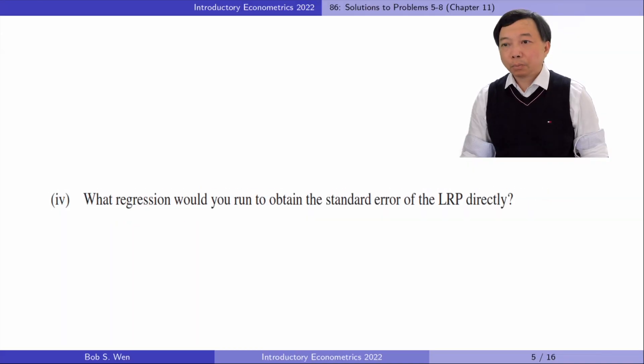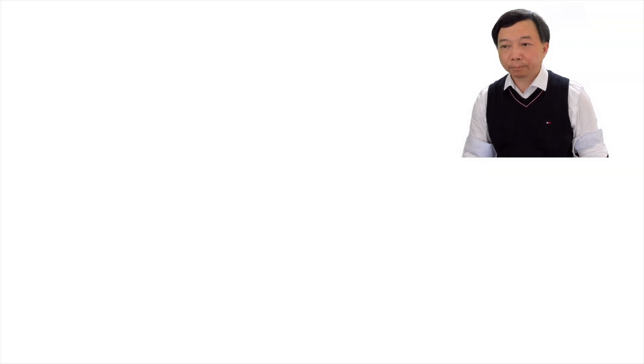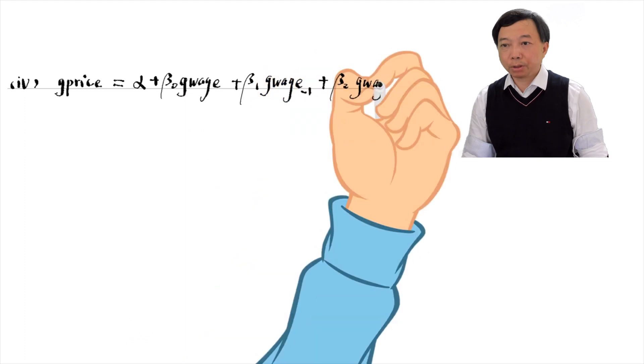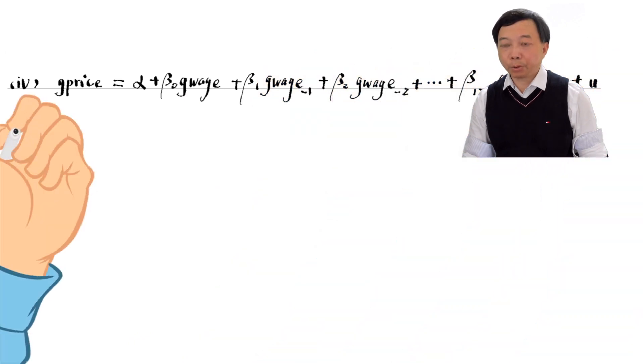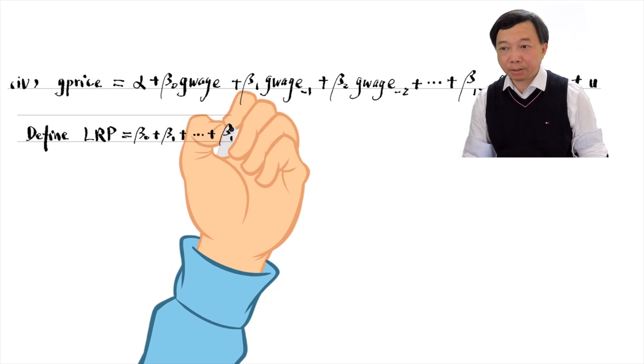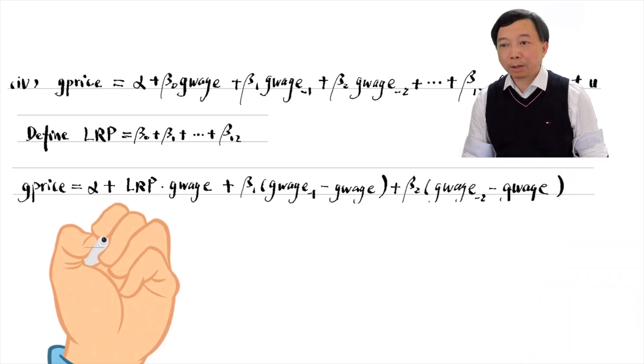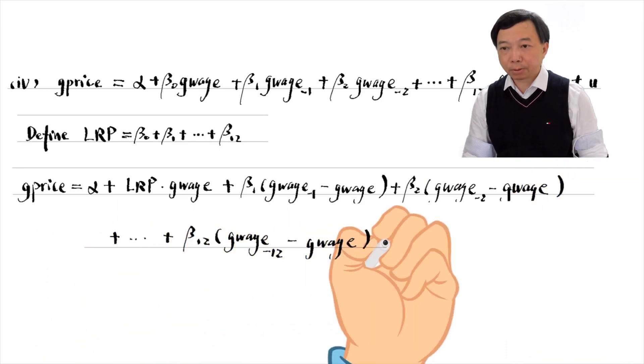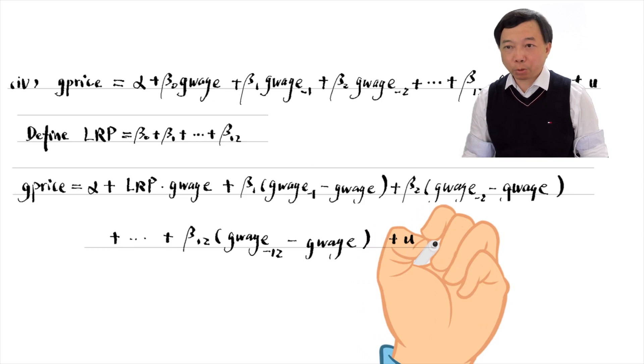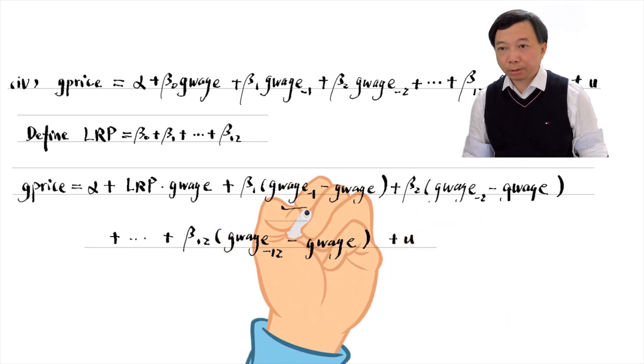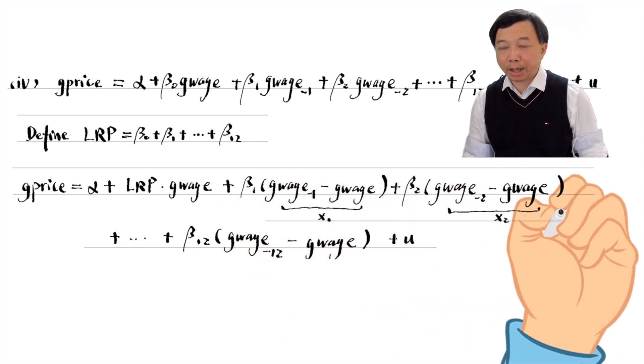In part 4, what regression would you run to obtain the standard error of the long-run propensity directly? We can use the trick introduced in the textbook to estimate a regression model that contains the long-run propensity as one of its coefficients. We define the coefficient LRP as the sum of the betas. We add to the right-hand side of the equation the term LRP times g_wage and subtract it so that the equation is unchanged. We arrange the equation and generate new variables x1 to x12.